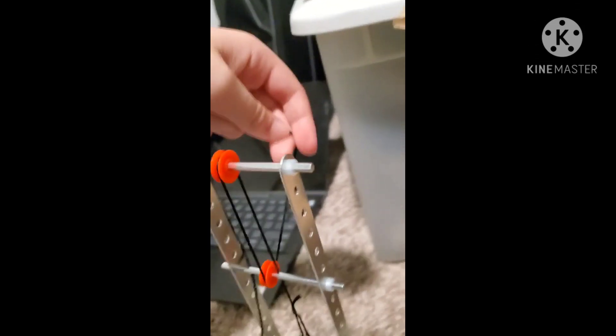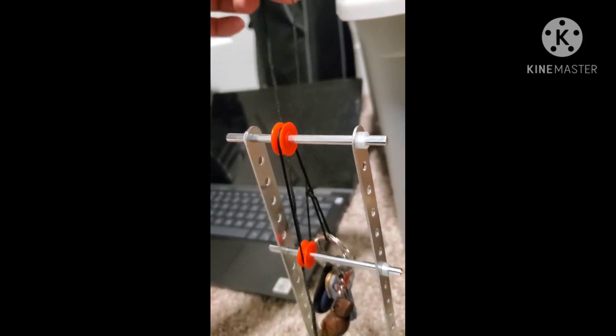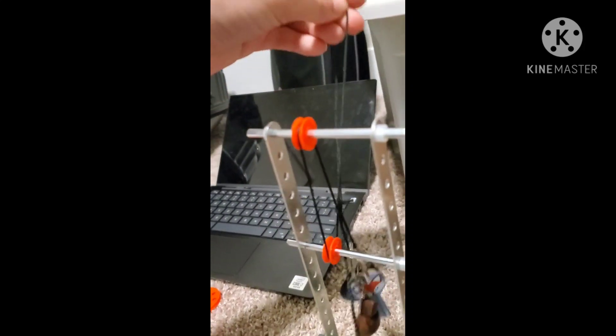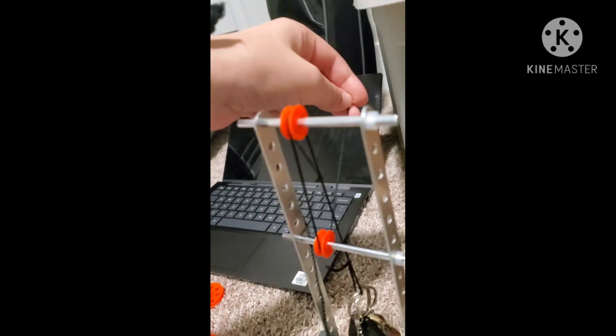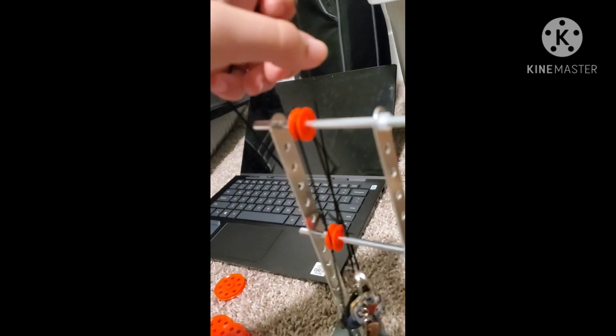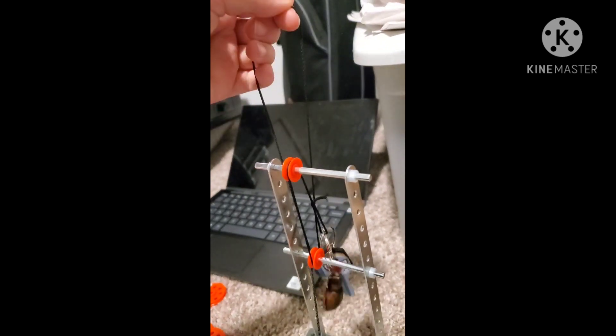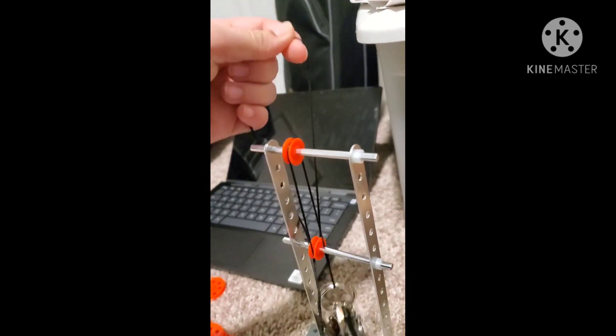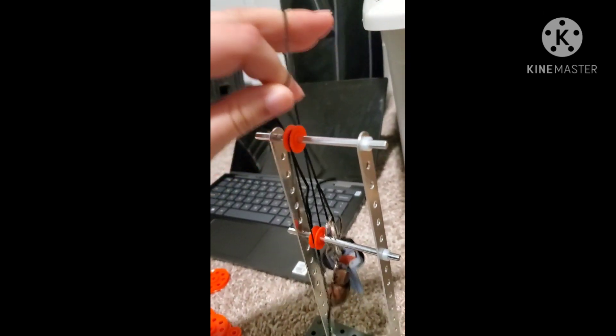So this is a compound pulley. The IMA is 2, so it's going to be 10 grams. Because it's like two upwards forces. I don't know how to really describe it, but anyways.